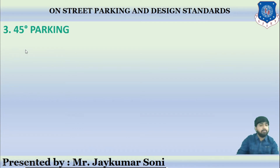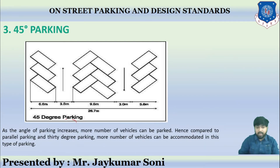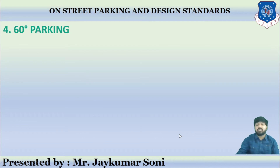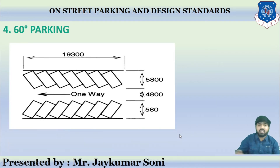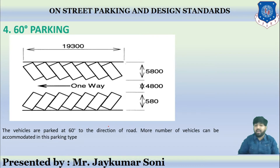Then comes 45-degree parking. As the angle increases, the number of vehicles that can be parked also increases. So more vehicles can be accommodated for 45-degree parking compared to 30-degree and parallel parking. Similarly, for 60-degree parking, the angle is higher than 45 and 30 degrees, so the number of vehicles parked is higher still.